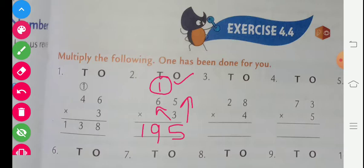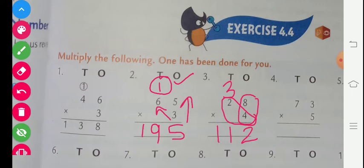Question number 3 is given: 28 multiplied by 4. First we multiply these two digits. 4 eights are 32. We write 2 here and carry 3. Now we multiply 4 twos are 8, plus 3 carry is 11. Our answer will be 112.